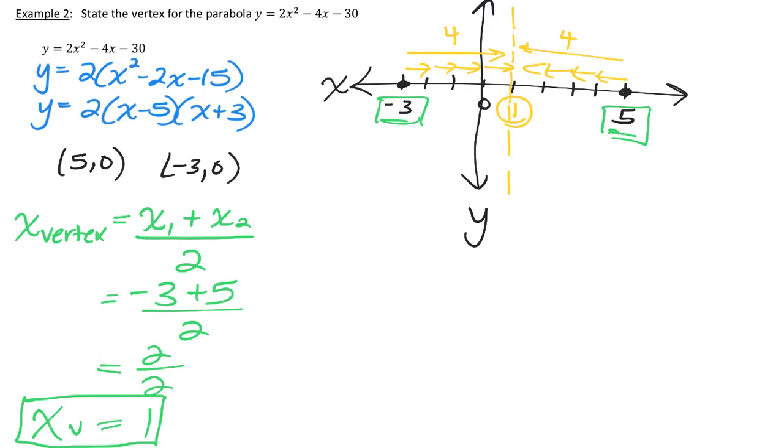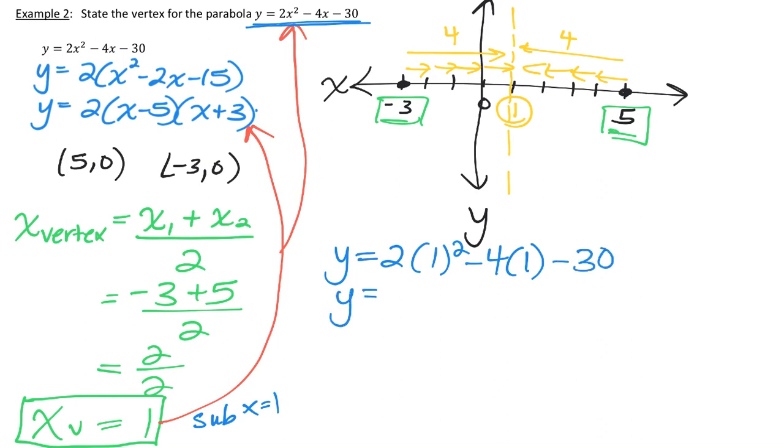So I'm sort of halfway there because to find the vertex, I need the x value and the y value. What I can do is take this x value and plug it back into what I know—either this equation or that equation—to figure out my y value of the vertex. I'm going to use the one that was printed for me on the page because if I made a mistake here, I'm reinforcing that. So I always like to go back to what's printed on the page. I'm going to sub x equals 1 into that equation. So y = 2(1)² - 4(1) - 30. So it's going to be 2 - 4 - 30. So y is equal to negative 32.